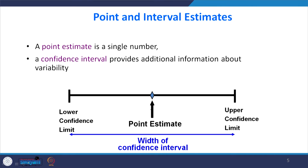There are two types of estimates. A point estimate is a single number. A confidence interval provides additional information about the variability of that point estimate — this is called an interval estimate. Because a point estimate is only a single number, it is not very reliable. But a confidence interval gives additional information about the variability of the point estimate. For example, if I say tomorrow's temperature will be exactly 35 degrees Celsius, that is a point estimate.